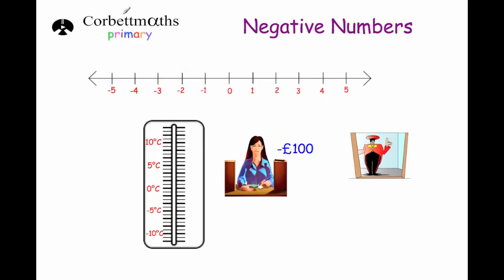Welcome to this Corbettmaths primary video on negative numbers. You may have seen negative numbers before in a range of places. For instance, you may have seen a number line like this before — there might even be one on your classroom wall — where you've got zero in the middle, positive numbers to the right and negative numbers to the left. You may have seen some negative numbers on a thermometer before, so when it goes below freezing point, you've got these negative numbers.